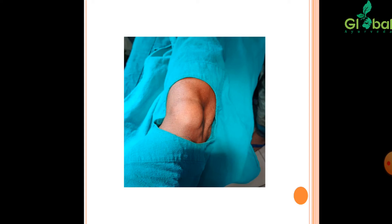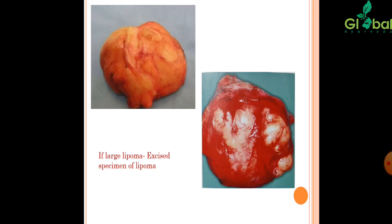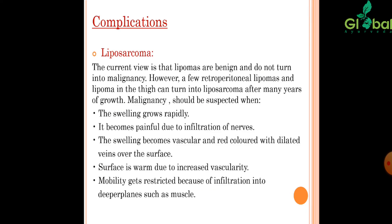This shows the pre-operative picture and the picture after excision of the angiolipoma. For large lipomas, the excised specimen is shown. Regarding liposarcoma: the current view is that lipomas are benign and do not turn malignant. However, a few retroperitoneal lipomas and lipomas in the thigh can turn into liposarcoma after many years of growth. Malignancy should be suspected when the swelling grows rapidly, becomes painful due to infiltration of nerves, becomes vascular and red with dilated veins over the surface, or the surface becomes warm due to increased vascularity, and mobility gets restricted due to infiltration into deeper planes such as muscle.